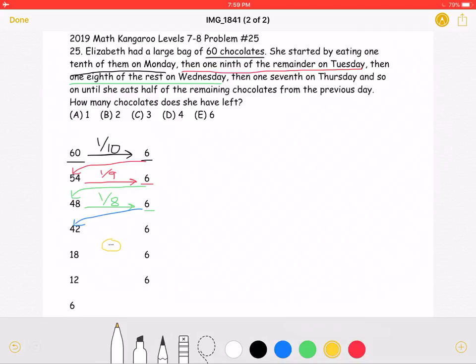When she has 18 chocolates, and she eats one-third of them, she will be eating six chocolates. Subtract six from 18, and we will have 12 chocolates left.